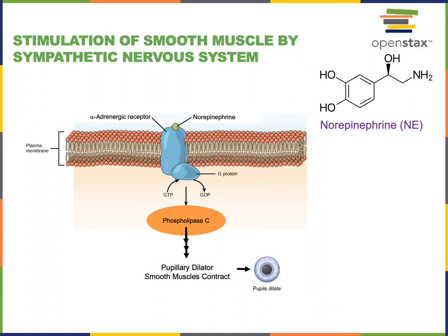The sympathetic nervous system can also stimulate contraction of multi-unit smooth muscle in the iris. Post-ganglionic sympathetic neurons release norepinephrine to stimulate contraction of the radially arranged pupillary dilator muscles. Norepinephrine binds to an alpha-adrenergic receptor, which is a heterotrimeric G-protein coupled receptor. The G-protein activates phospholipase C, which produces inositol triphosphate, stimulating calcium release and smooth muscle contraction in the pupillary dilator muscles, causing increased diameter of the pupil to increase the amount of light entering the eye.